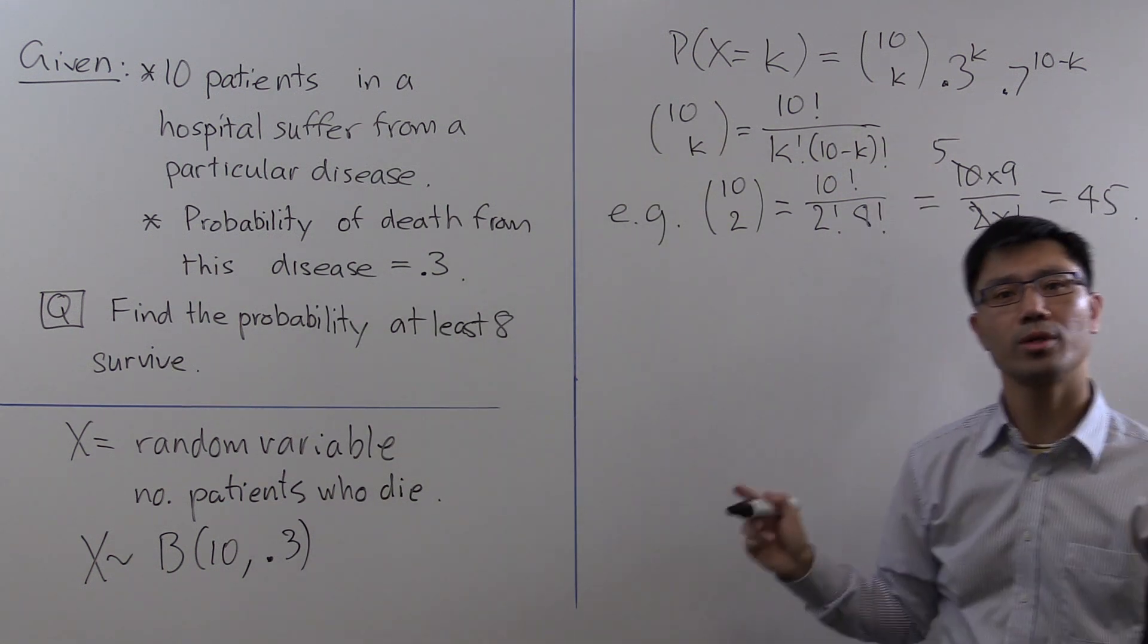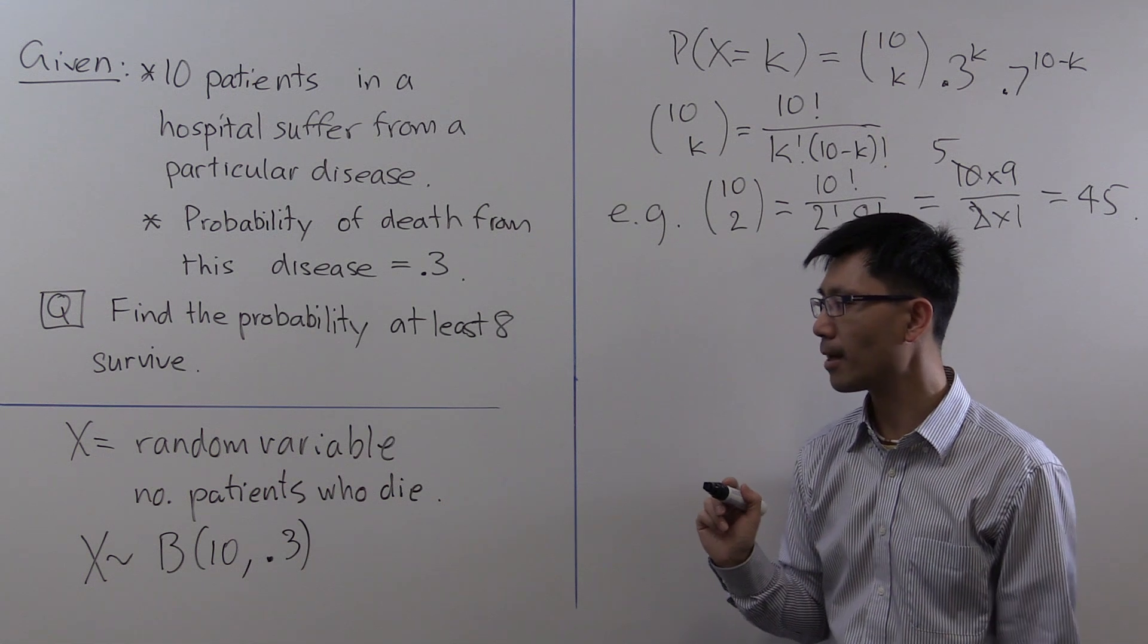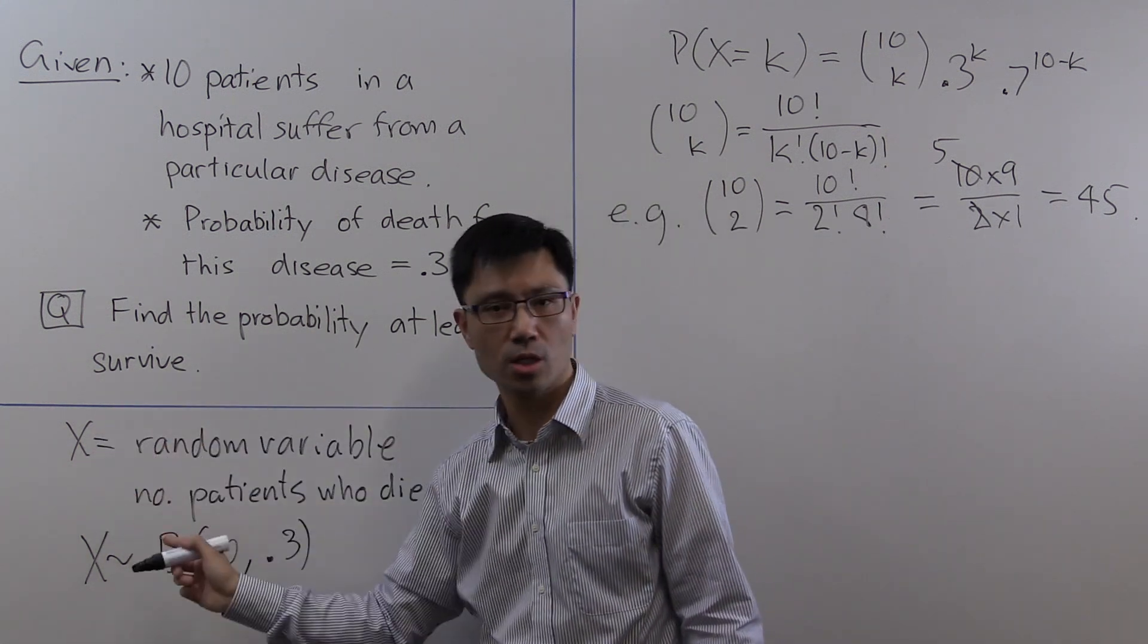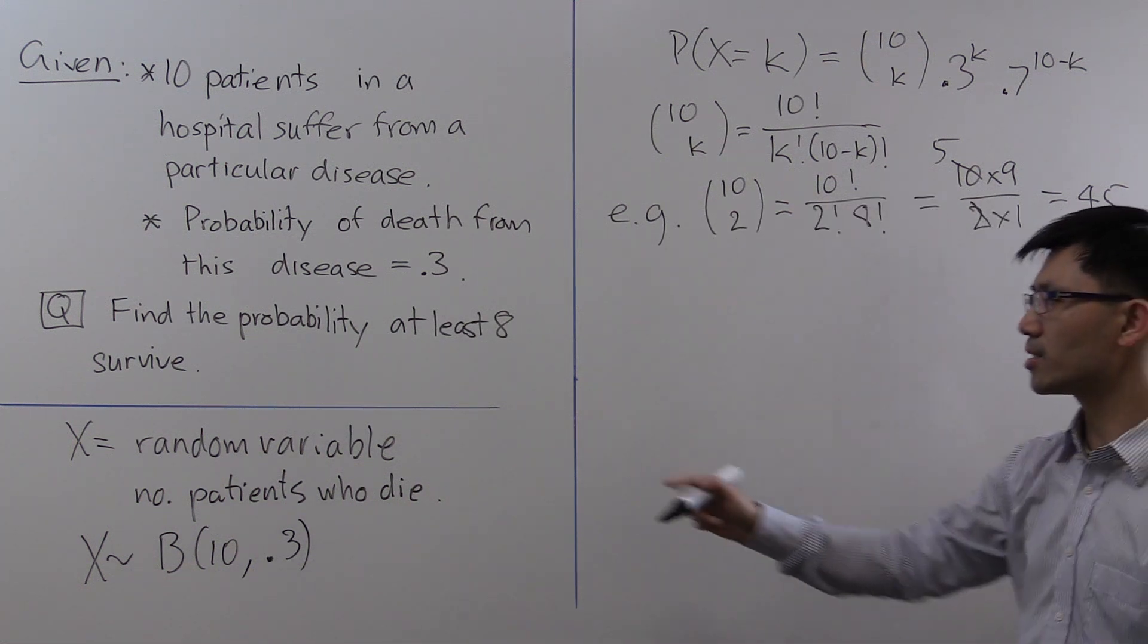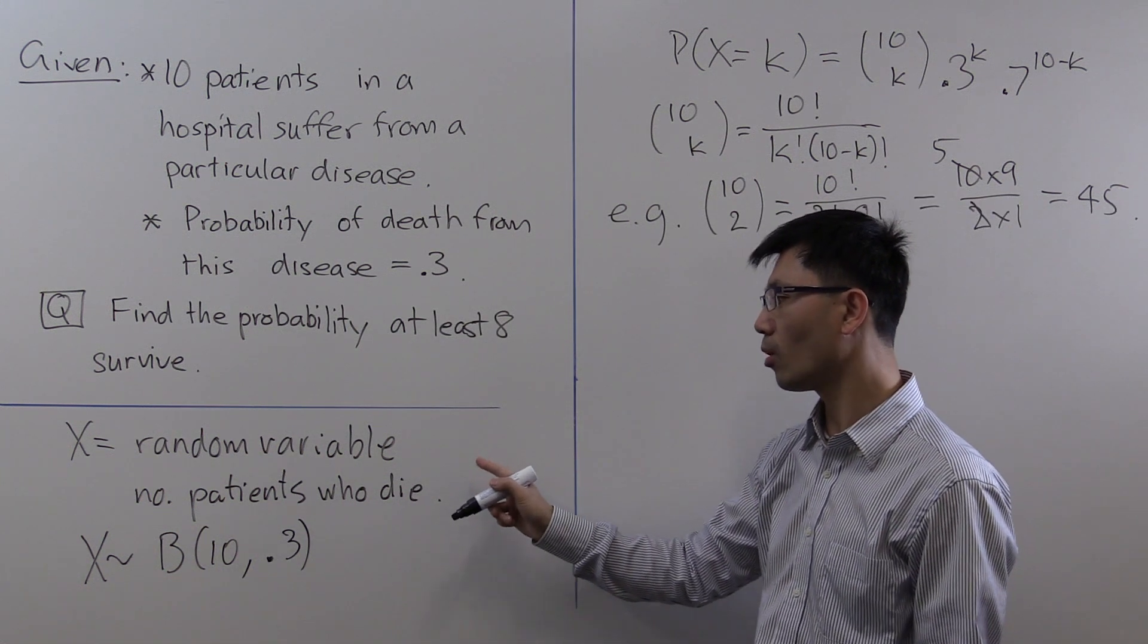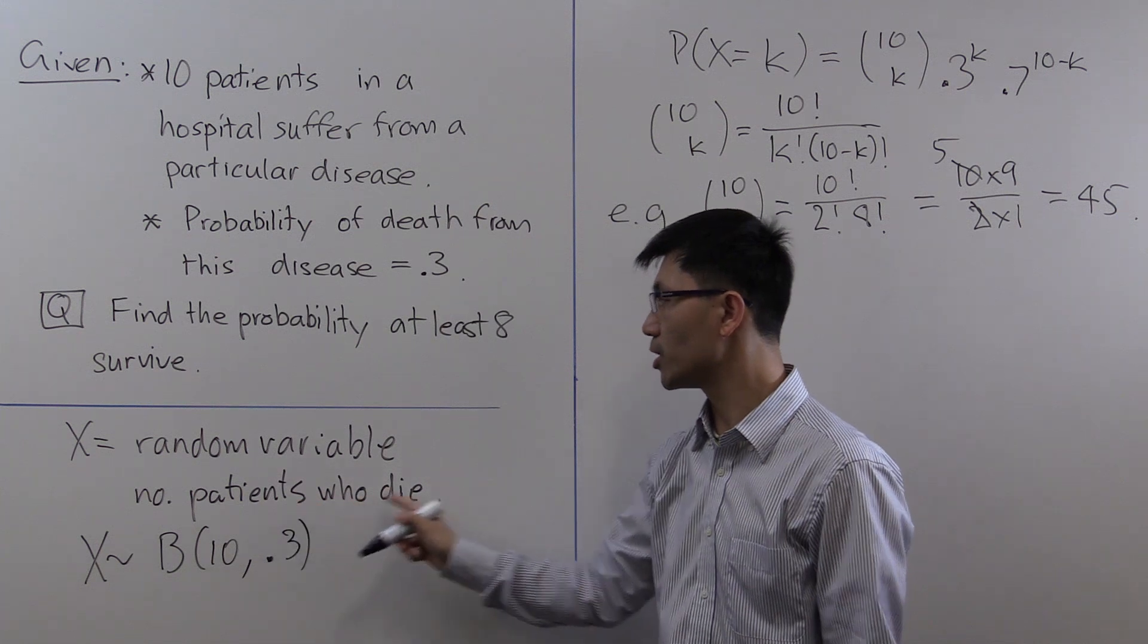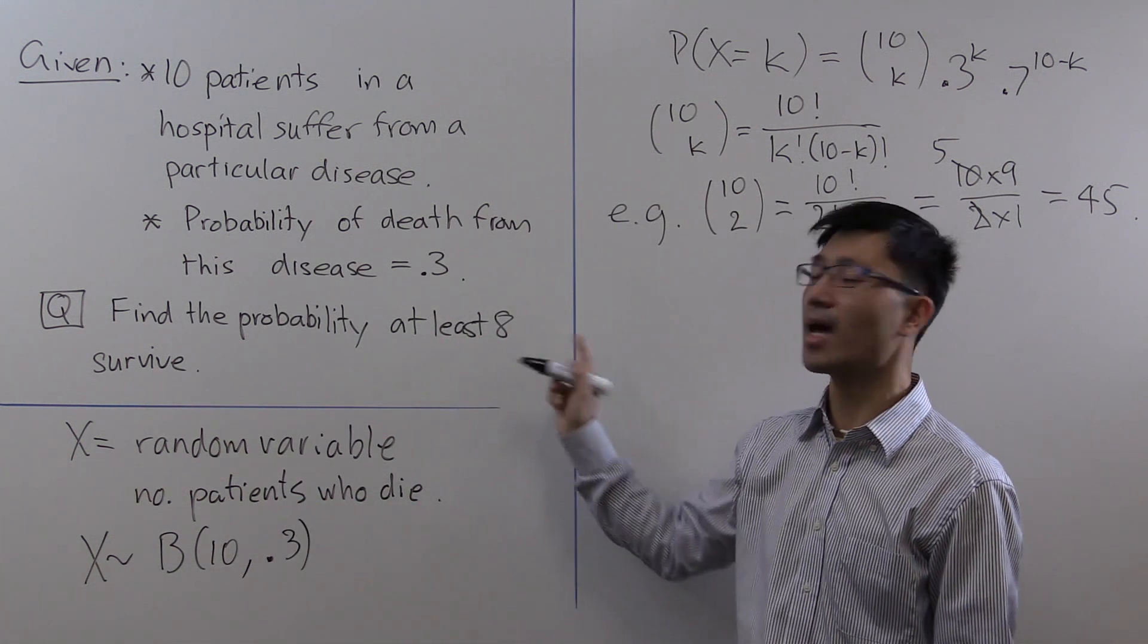So that's the formula we'll need to use to answer this question. Let's see in this terminology how we can write down what this probability is. X is the random variable giving the number of patients who die, and we want to say that at least 8 survive.